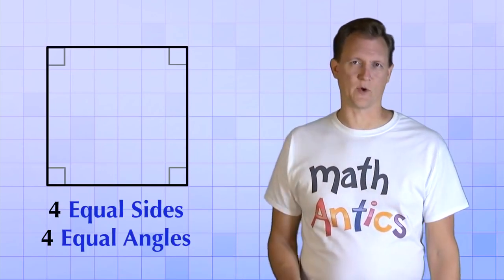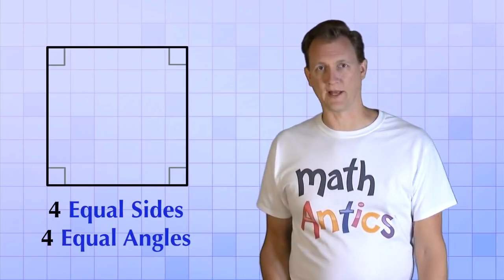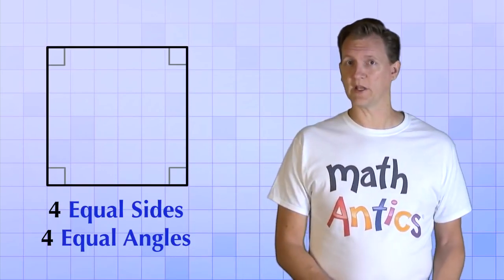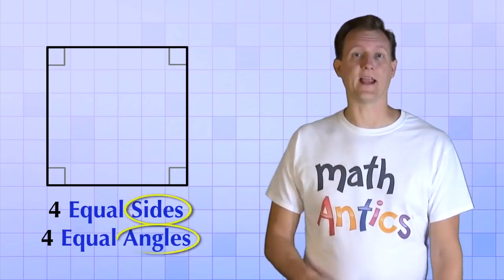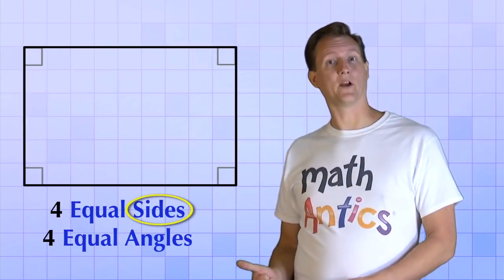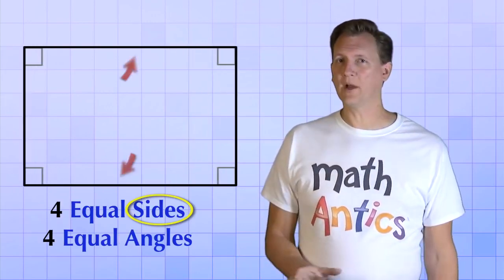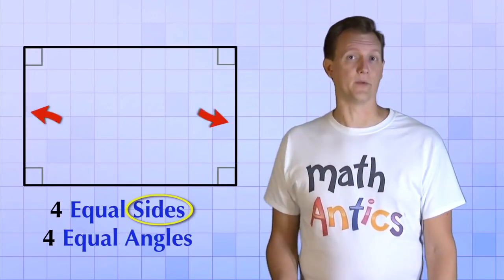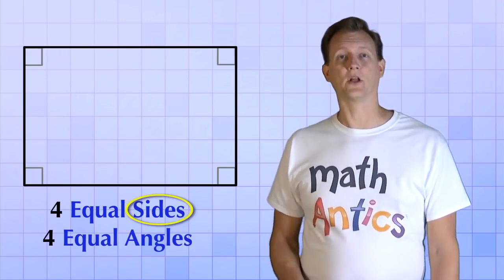But we're going to make some changes to this square to see what other types of quadrilaterals there are. The two things that we can change are the sides and the angles. Let's start by changing the sides. Let's stretch our square in one direction so that one pair of sides is now longer than the other pair. This is what we call a rectangle.